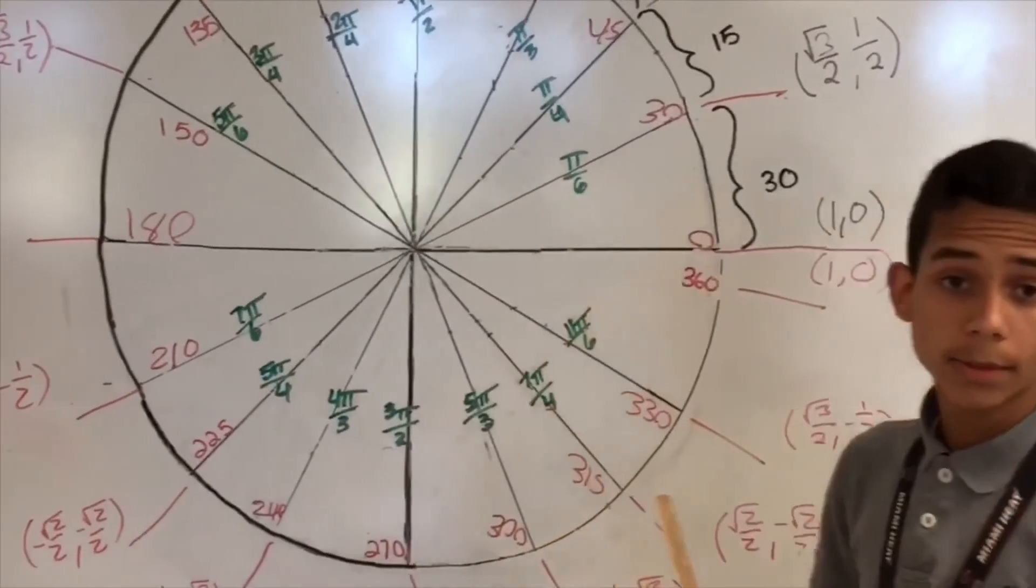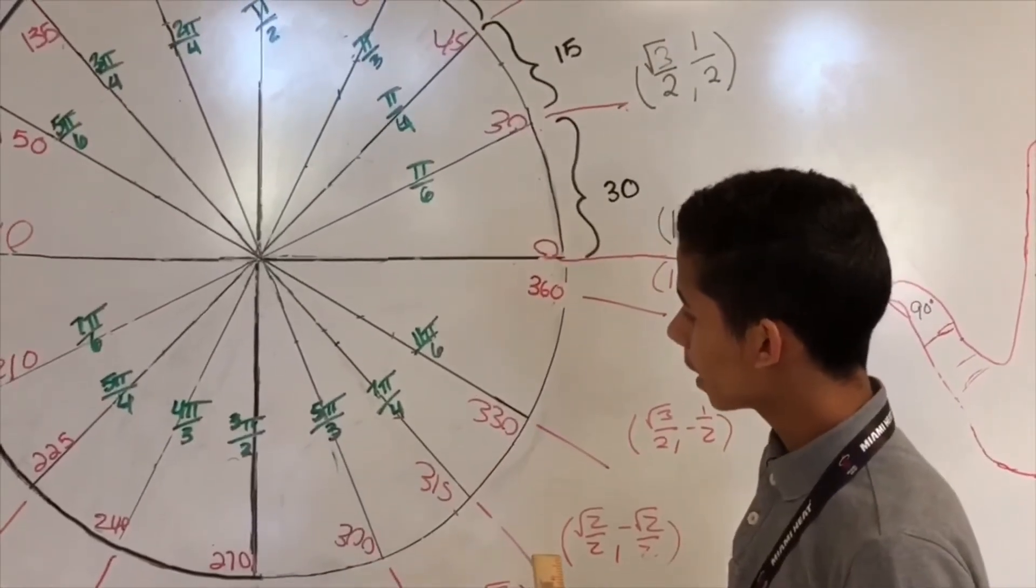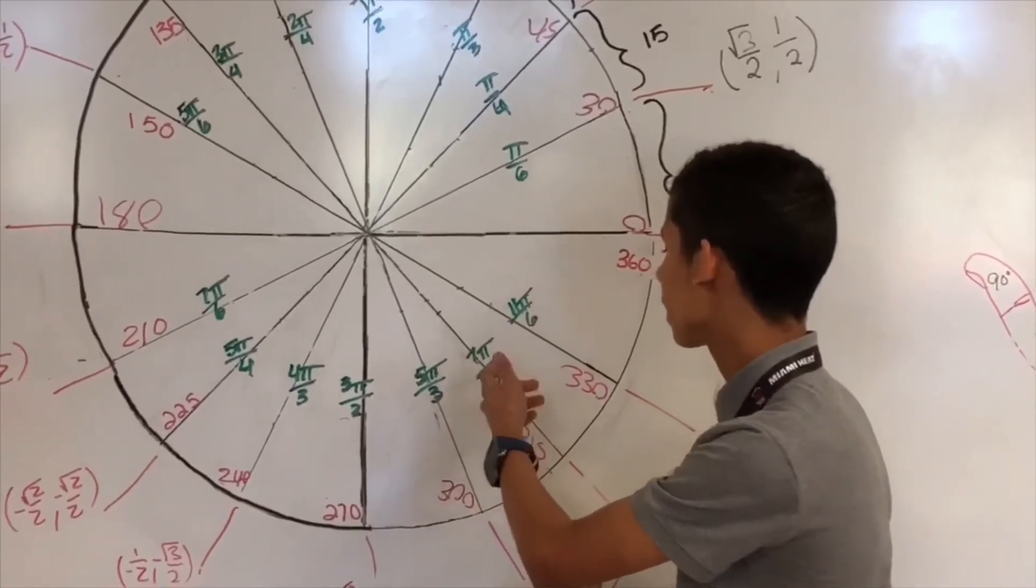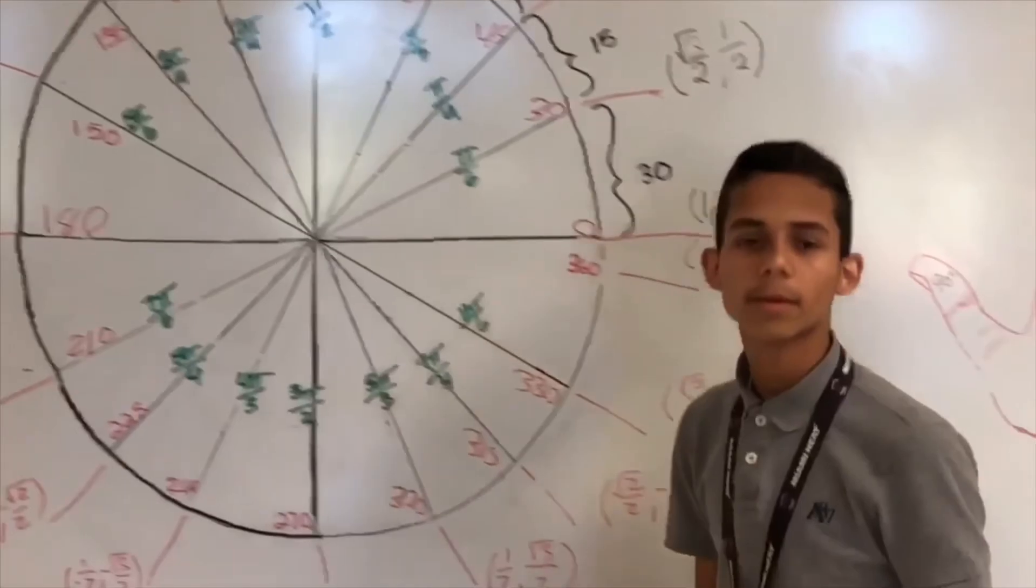Now, I'm going to do it reverse. So, let's take 7π over 4. What you're going to do in this case, since you're going from the bottom to the top, you're going to subtract. So, you're going to take 7 minus 4. You will get 3π. You keep the denominator. And there it is.